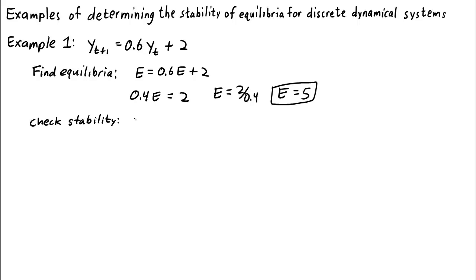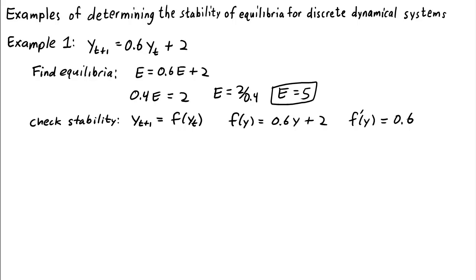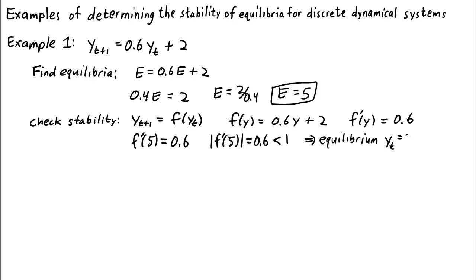Now we want to check stability. To do this analytically, we write the dynamical system as y(t+1) = f(y_t). In this case, the updating function f(y) = 0.6y + 2. We calculate the derivative: f'(y) = 0.6, which is constant since f is a linear function. Plugging in the equilibrium e = 5, f'(5) = 0.6. The absolute value of the derivative at the equilibrium is 0.6, which is less than 1, which implies the equilibrium y_t = 5 is stable.